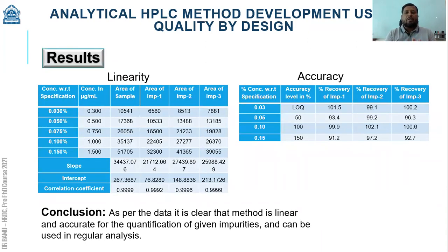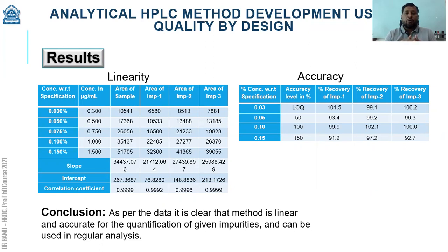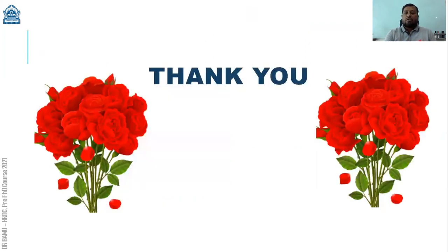I generated some data for the methods I developed. Linearity was performed for the impurities including the sample, and it was within the acceptance range of the correlation coefficient. Accuracy studies for the impurities were also found to be within the required limits, performed from 50 to 150 percent of the specification range. In conclusion, the method is found to be linear and accurate for the given impurity for quantitative analysis in routine laboratories. I would like to thank you for giving me this opportunity and for your kind support. Thank you very much.